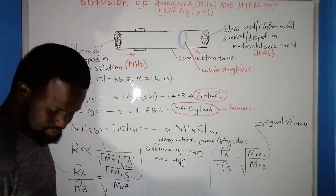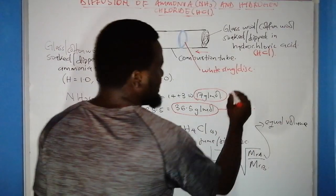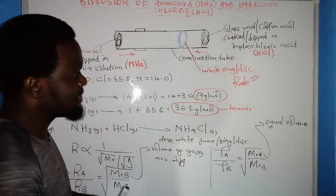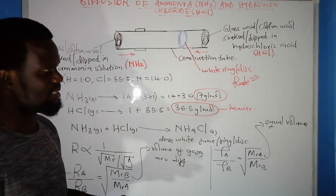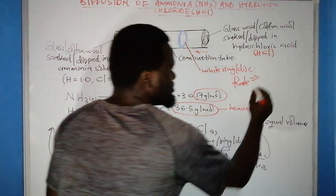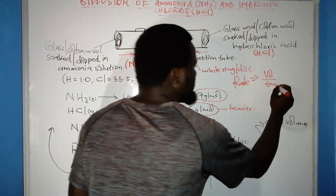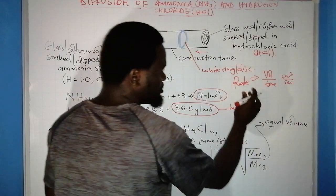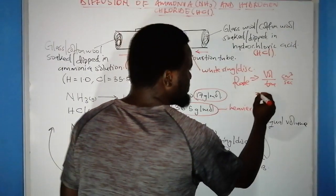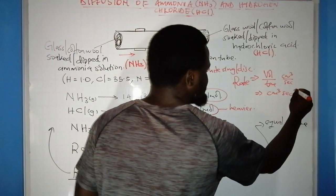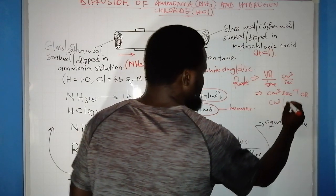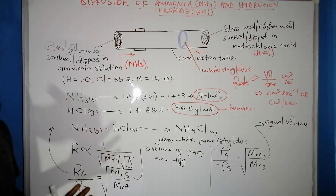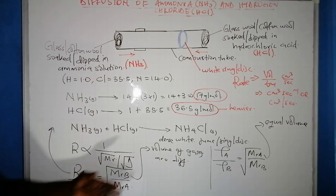How do we calculate rate? Rate is the movement of something with respect to time. In our case, rate equals volume of gas divided by time. Volume is given in cubic centimeters and time in seconds, so the SI unit of rate is cubic centimeters per second.